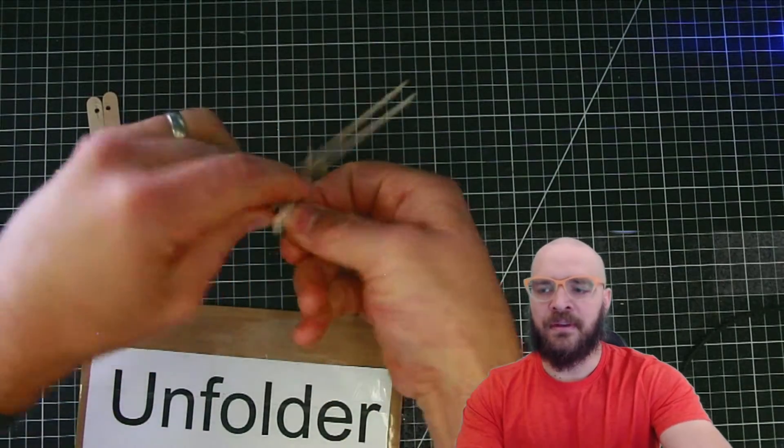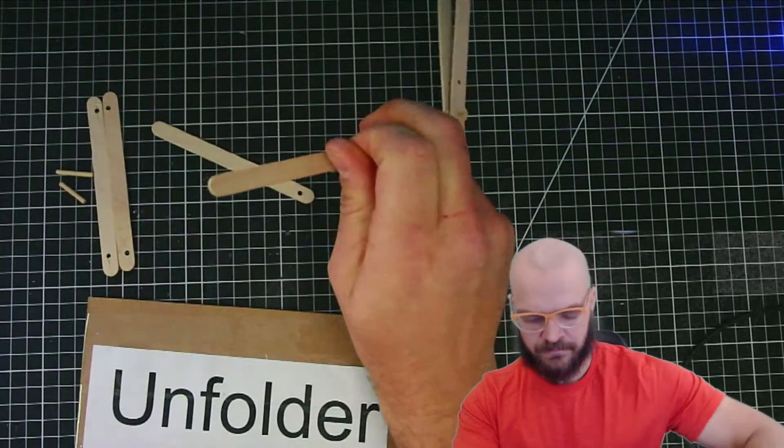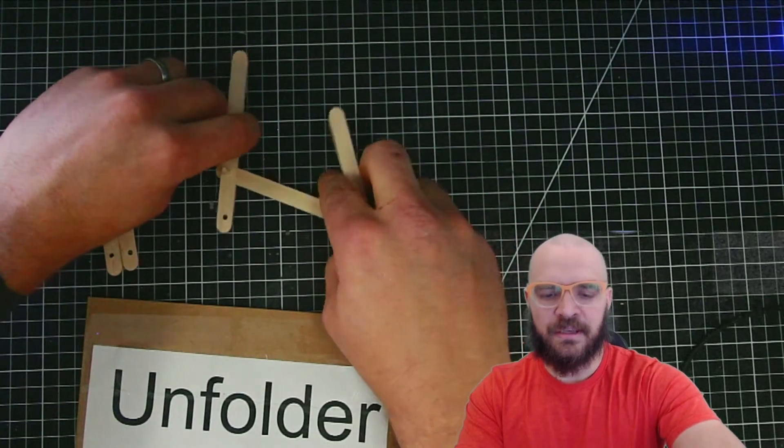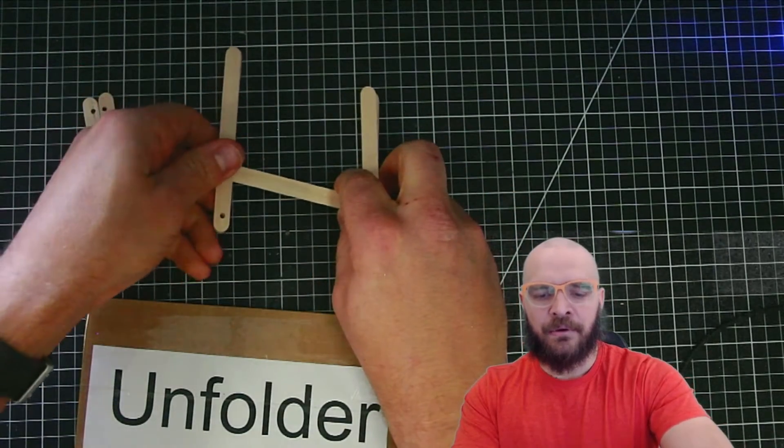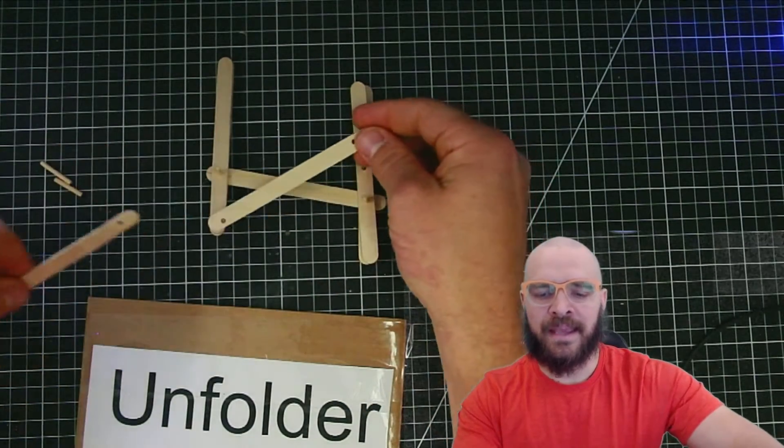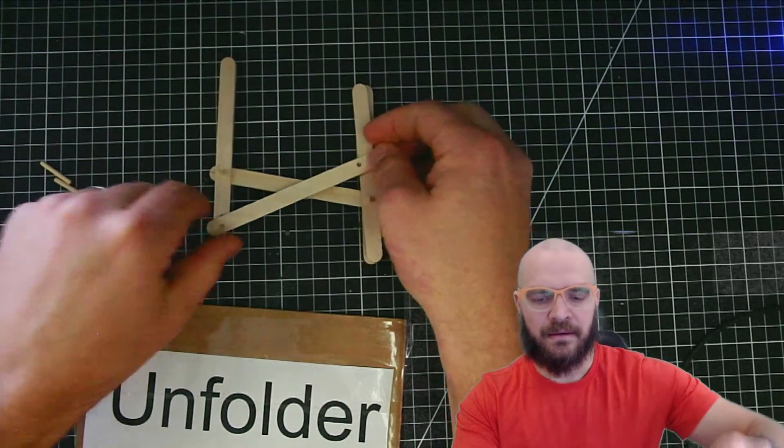You'll see it's really straightforward. There it is with the first linkage in—that one goes in between everything. Now these last two linkages are going to go on the outside of everything.